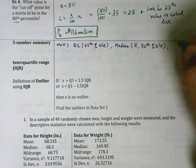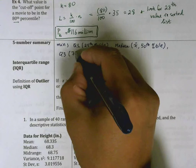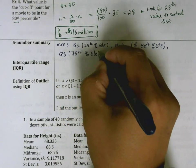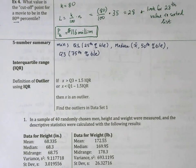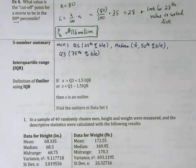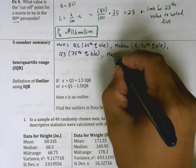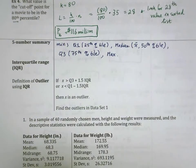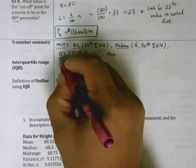We have Q3, which is the 75th percentile. We know methods for calculating all of this, but don't worry about that too much. What I want you to focus on is what these numbers mean and what they represent. And then finally, we have the maximum value. So five numbers: the minimum value, Q1, the median, Q3, and the maximum value.